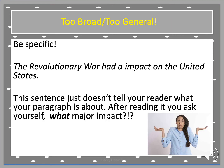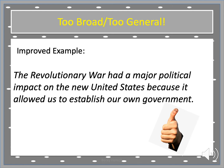Here's another example of being too vague: 'The Revolutionary War had an impact on the United States.' That's very vague — it doesn't tell your reader what your paragraph is about. After reading it, I asked myself: what major impact? An improved example: 'The Revolutionary War had a major political impact on the new United States because it allowed us to establish our own government.' That's way more specific — that is a good topic sentence.